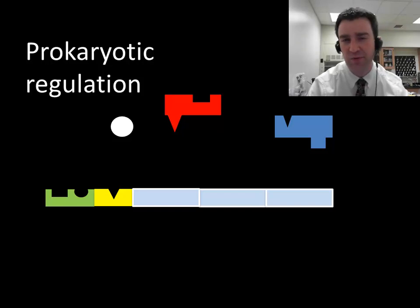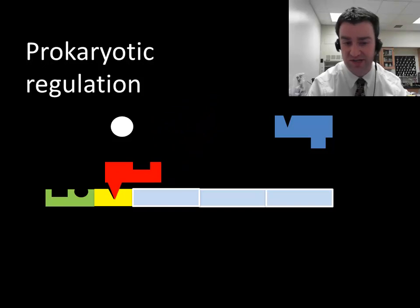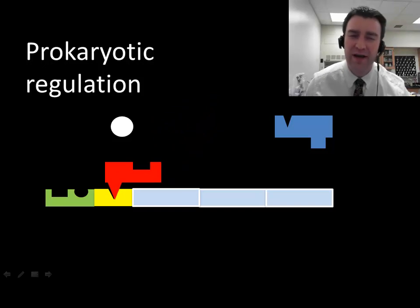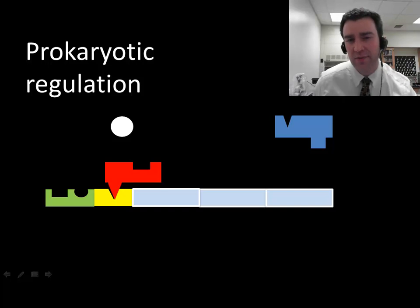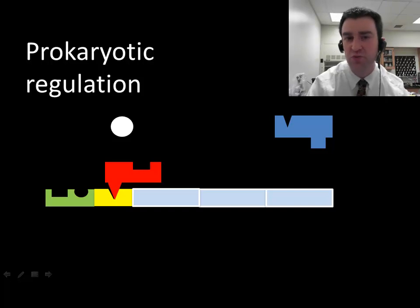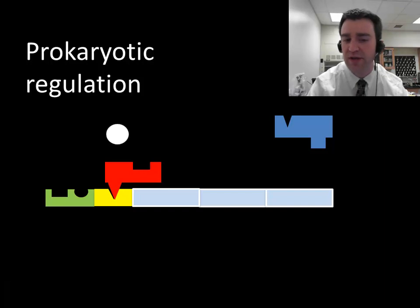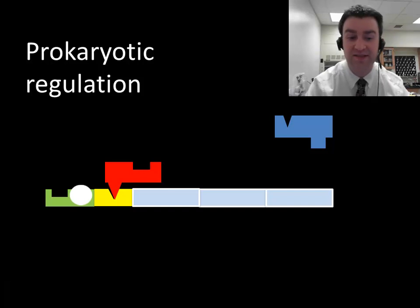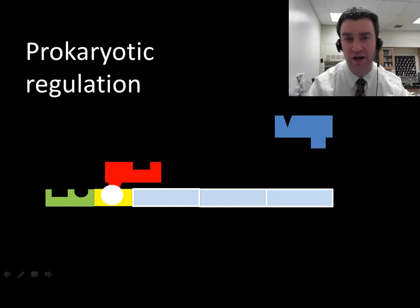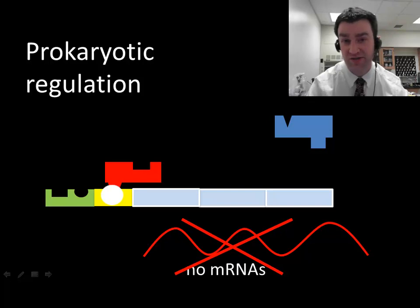Now let's talk about it with the repressor doing its job. If the repressor binds at the operator region, why does it want to bind there? Because the operator region is in between the promoter and the gene. The repressor wants to repress gene expression, so if it's there at the operator in between the promoter and the genes, then when RNA polymerase binds at the promoter it's going to run into the repressor protein and fall off. Importantly, no mRNAs are going to be produced — gene expression has been repressed.